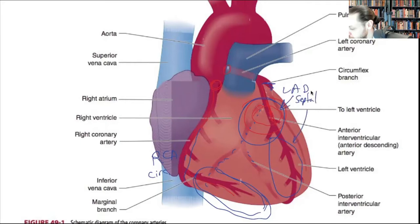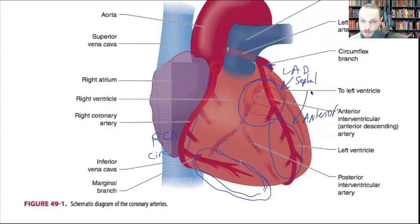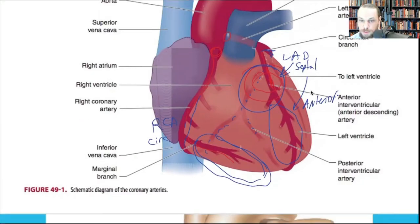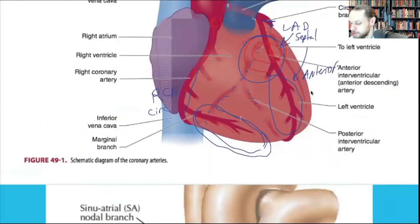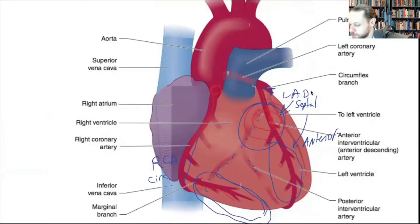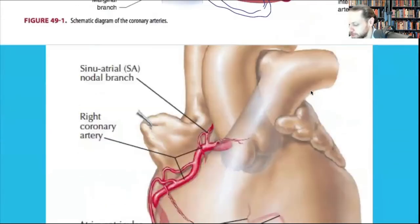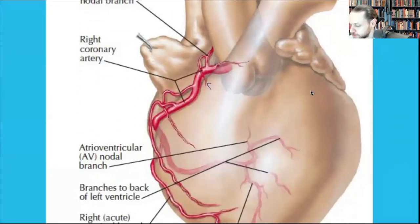Any questions about this? This is very important to understand once we do the 12-lead. The right coronary artery also feeds the SA node and the AV node.